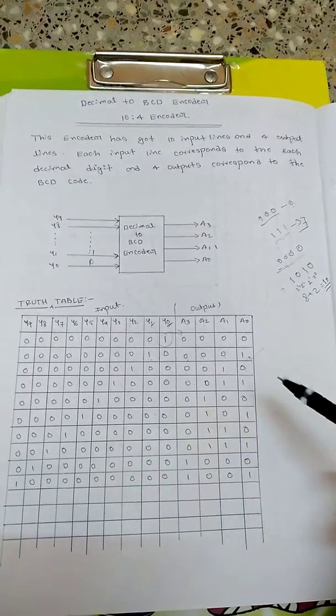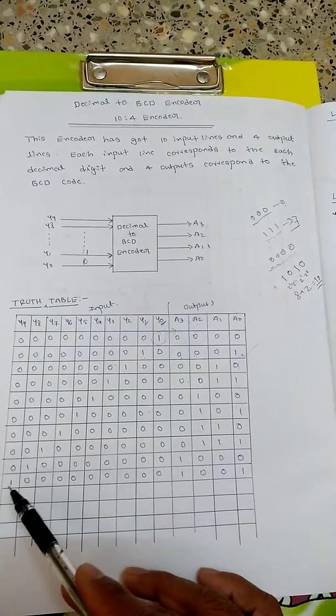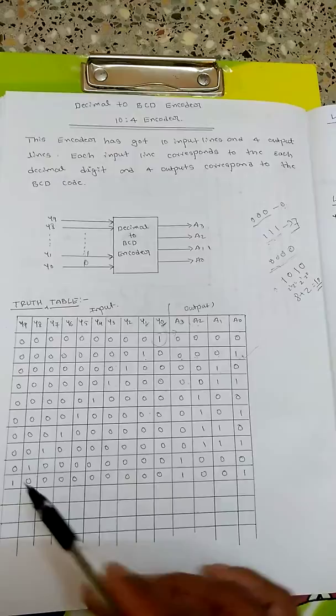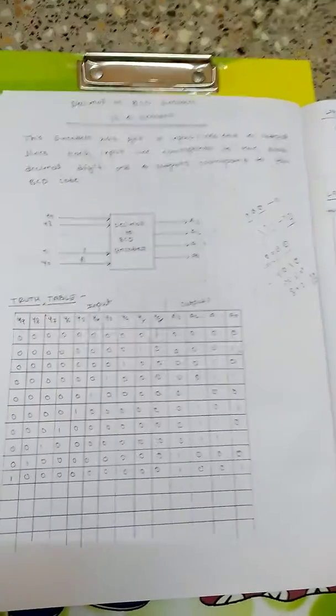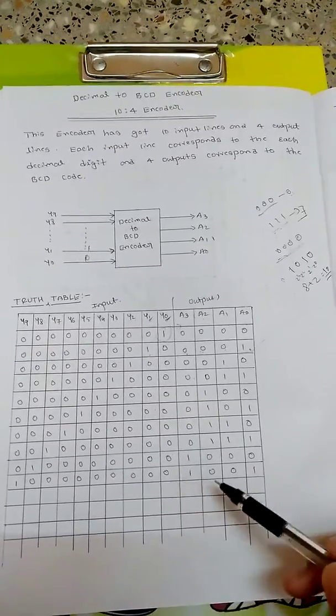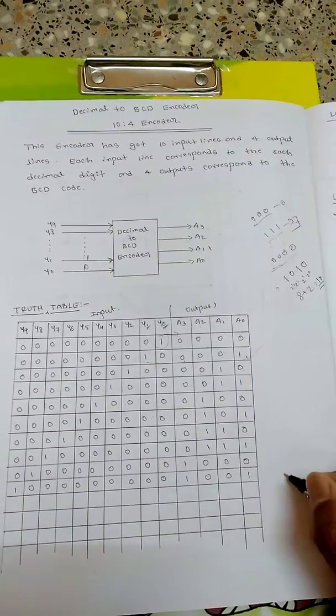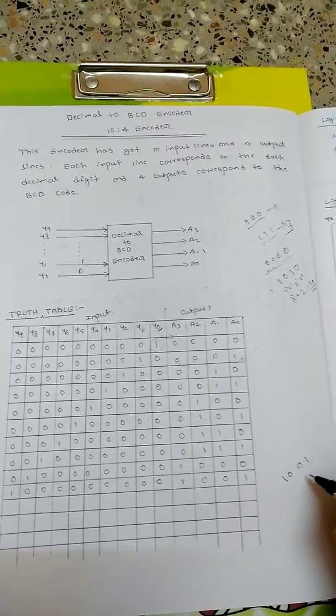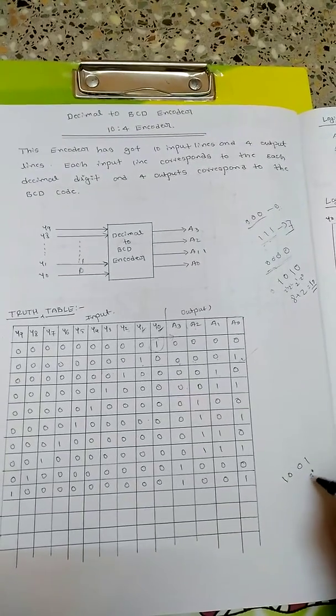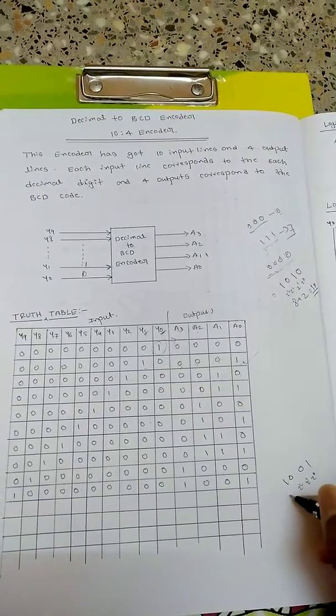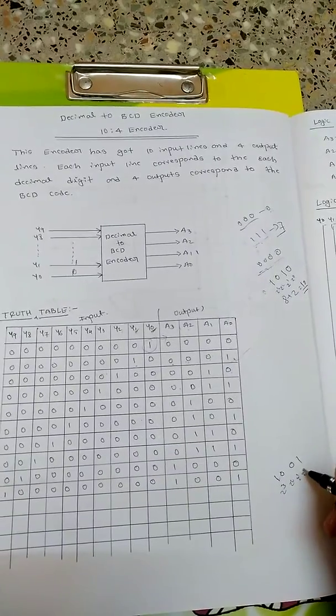For 2, if y2 is high then the equivalent BCD number for decimal 2 is 0010. Similarly for 3, 0011, and continuing for 4 it will be 0100. So up to when we come to y9, the output equation or output binary code for y9 will be 1001.